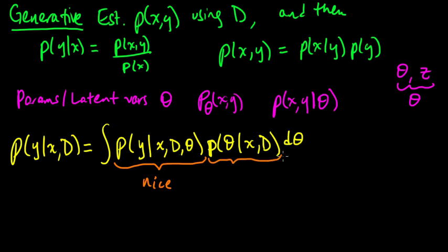So that part's nice. But this part is oftentimes nasty. This is the posterior distribution of theta given x and D. That's what we call the posterior distribution.